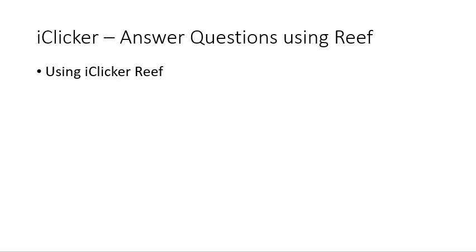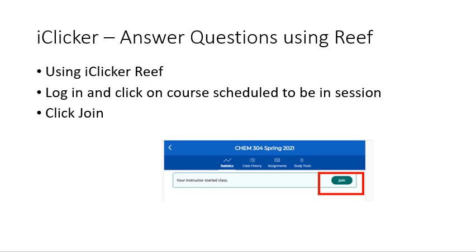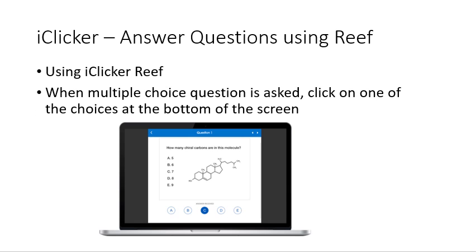To participate in iClicker polls using Reef, log into your iClicker Reef account and click on the course that is scheduled to be in session. As soon as your teacher starts an iClicker session, you will get a message that the teacher has started class. Click the 'Join' button and you will receive a message that you are checked in. When your teacher asks a multiple choice question, respond by clicking one of the choices — A, B, C, D, or E — that appear at the bottom of the screen.